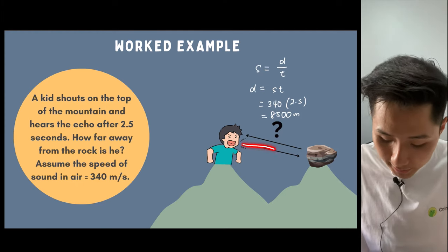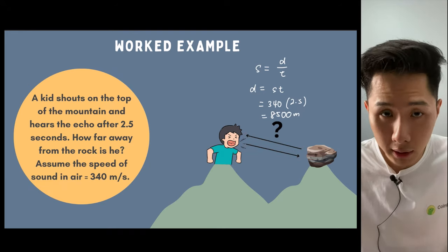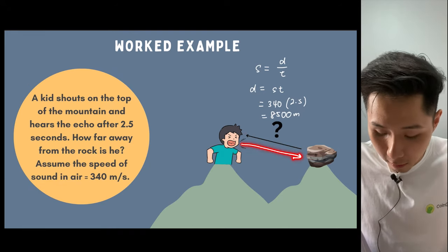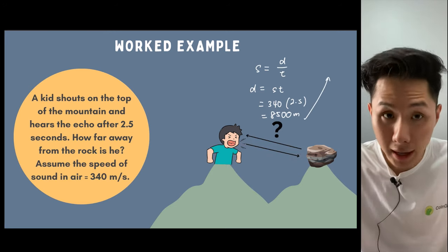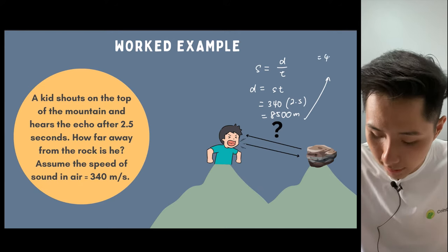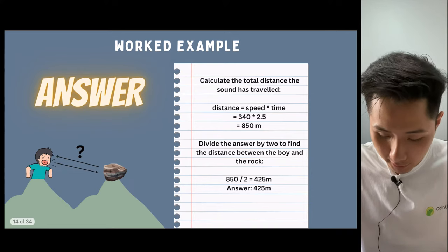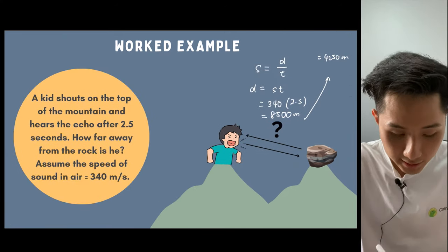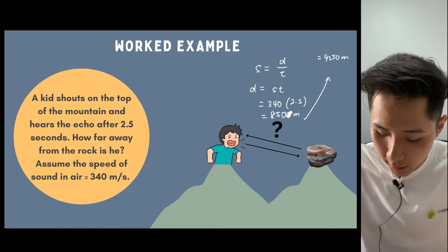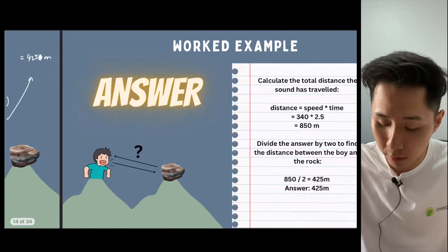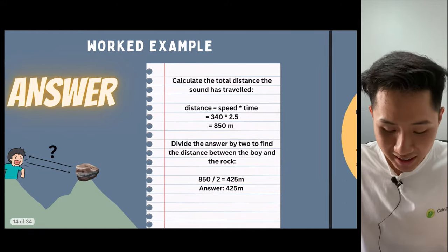The speed of sound, they ask us to assume that it's 340, and the time it takes is 2.5 seconds. So if you were to put that into a calculator, you would get 850 meters. But that's the distance that the sound traveled. But the problem we're trying to solve here is how far is the boy from the rock. Therefore, you have to divide the result by 2 to get the distance, which will get 425 meters. I made a mistake here. Instead of 8500, it should be 850, and then the answer is 425 meters.